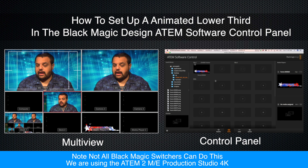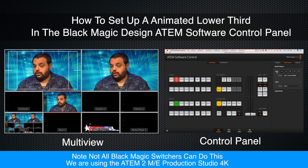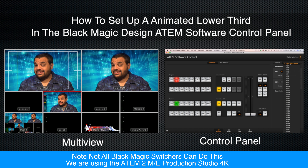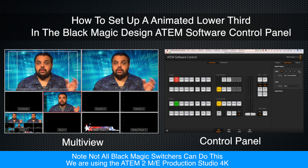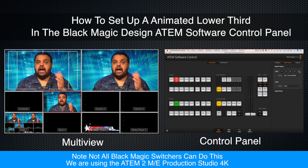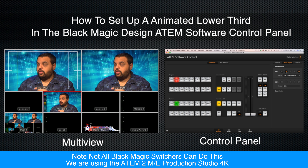Once you've done that, go back over to your Switcher tab at the bottom of your screen, go to Media Players, choose Media Player 1, and make sure that Clip 1 is selected. Once you've selected Clip 1, hit these two little arrows here if you want your lower third to loop. If you just want it to play and go out because your build-in and build-out animation is already pre-done, that's fine. I want it to continuously loop, so I'll hit the Loop button and then the Play button. Now if you look at Media Player 1 on our multi-view, you'll see the animation has started to loop.